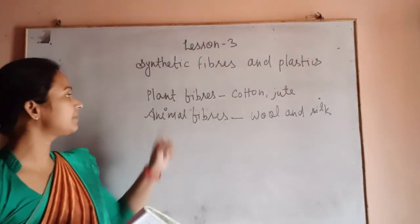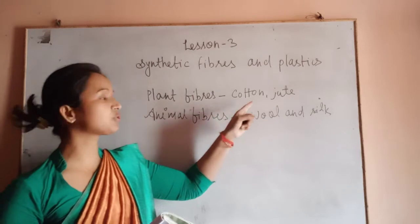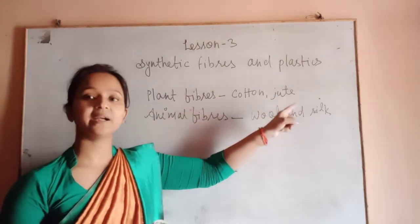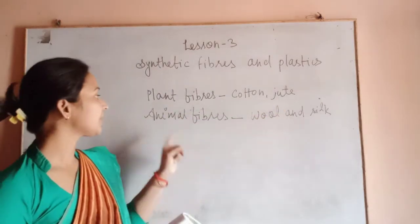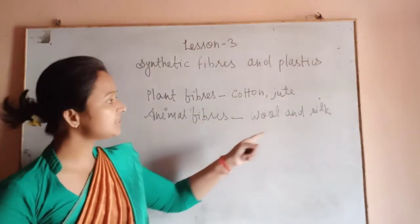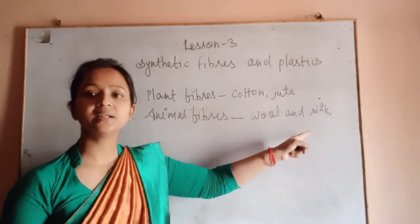What are animal fibers? Plant fibers are cotton and jute. Animal fibers are wool and silk.